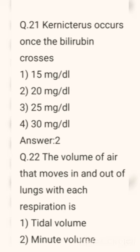Question number 21. Kernicterus occurs once the bilirubin crosses. Options are: 15, 20, 25, 30. Correct answer: Option 2 — 20 mg per deciliter.